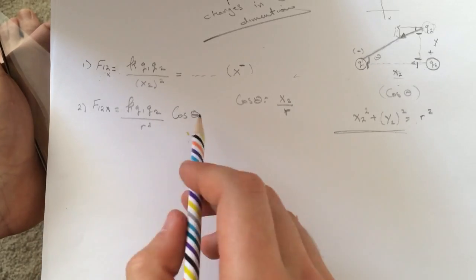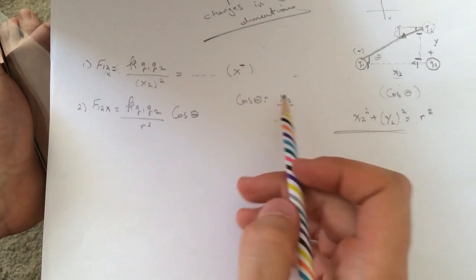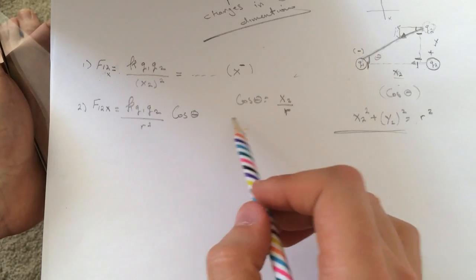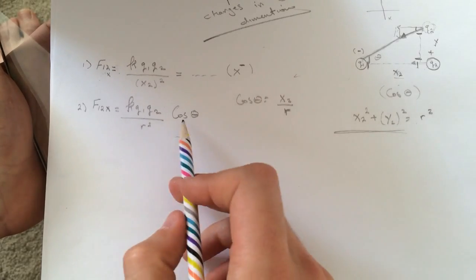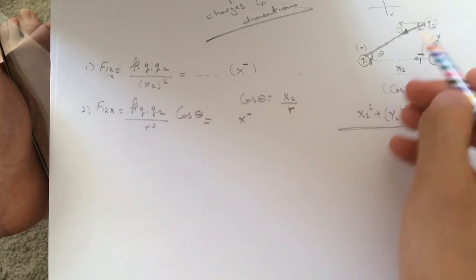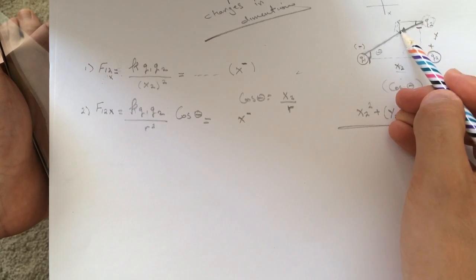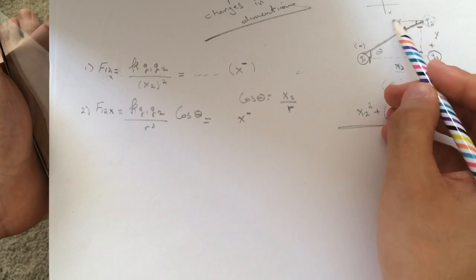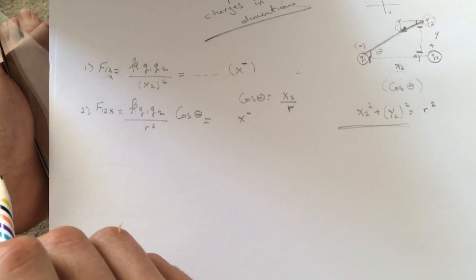So just multiply this thing by x2 divided by r or you can find the theta by doing the cosine inverse and just multiply it again here. And this force will be also in the x negative direction. You can see here it's going this way so part of it is going in the y negative and the other part is going in the x negative direction.